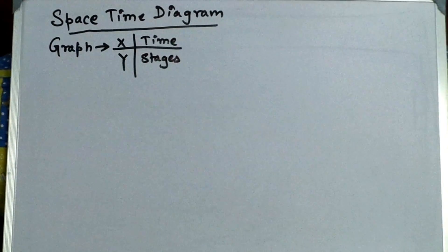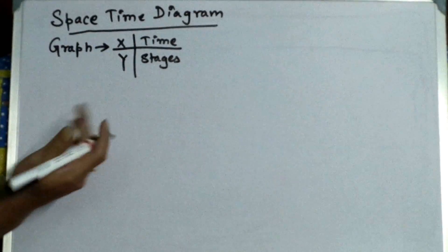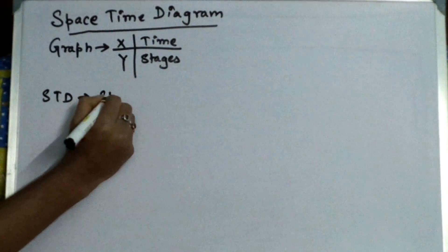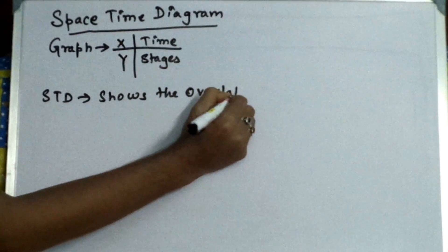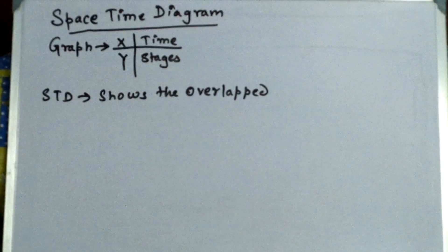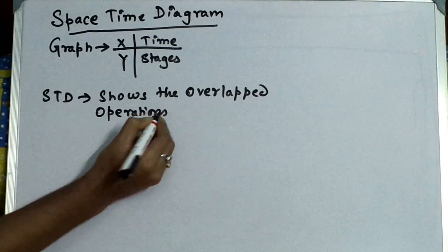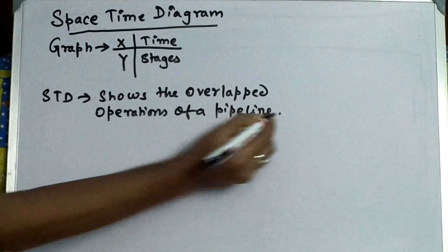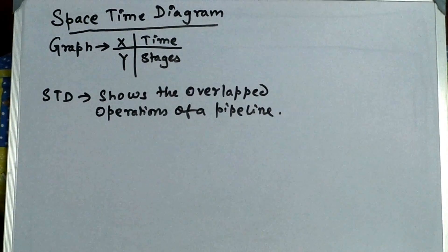So what is the resemblance of this space-time diagram? A space-time diagram actually shows the overlapped operations of a pipeline. So STD means space-time diagram shows the overlapped operations of a pipeline.